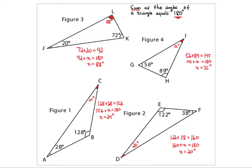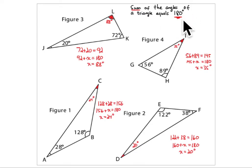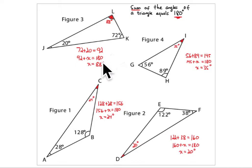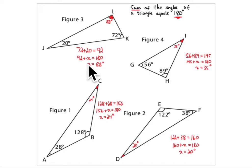These are the practice problems for lesson 16. In this first problem you are supposed to find the value of the missing angle. The key observation is that the sum of the angles of a triangle always equals 180 degrees. In figure three, you have 72 degrees and 20 degrees, using up 92 degrees. To get to 180, you need 88 more degrees, so the angle at point L must be 88 degrees.